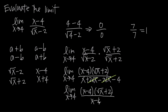Now we have x minus 4 in the numerator and x minus 4 in the denominator, so we can cancel those two factors. That leaves us with the limit as x approaches 4 of just the square root of x plus 2. Notice how the conjugate method reduced our function from a complicated fraction down to simply the square root of x plus 2.